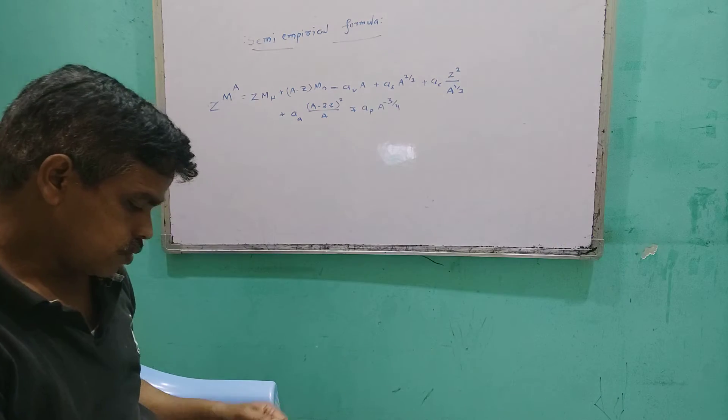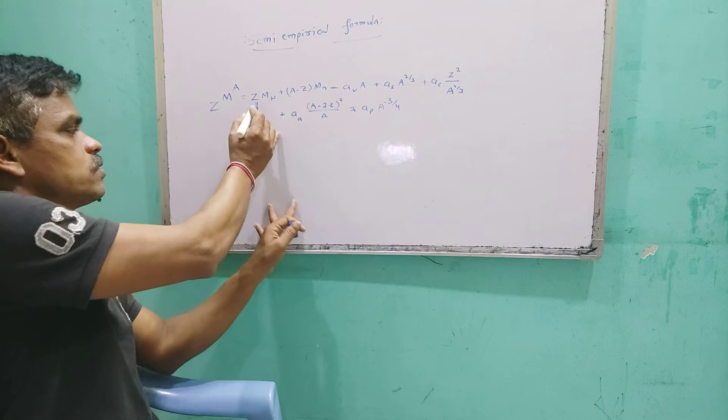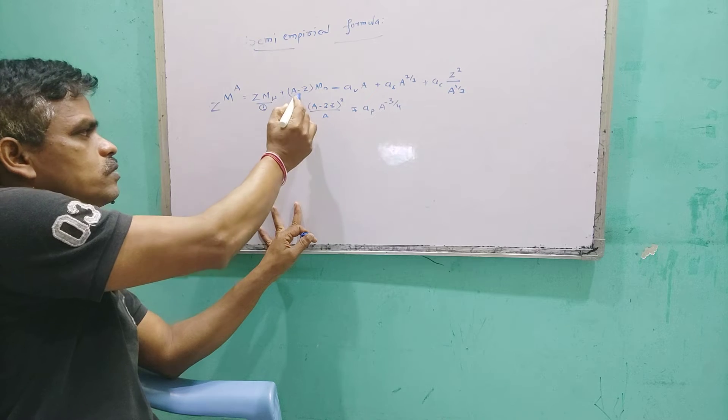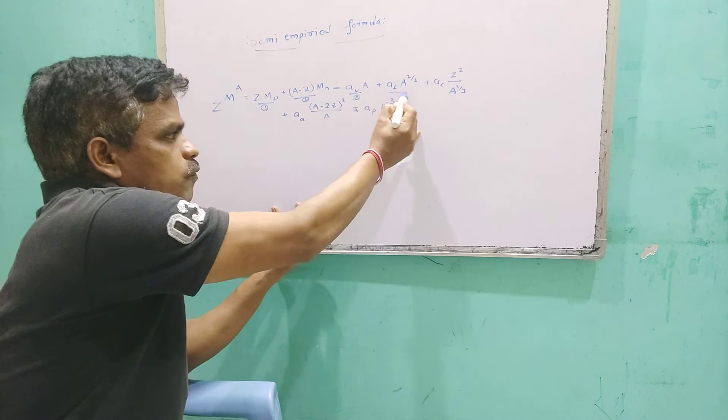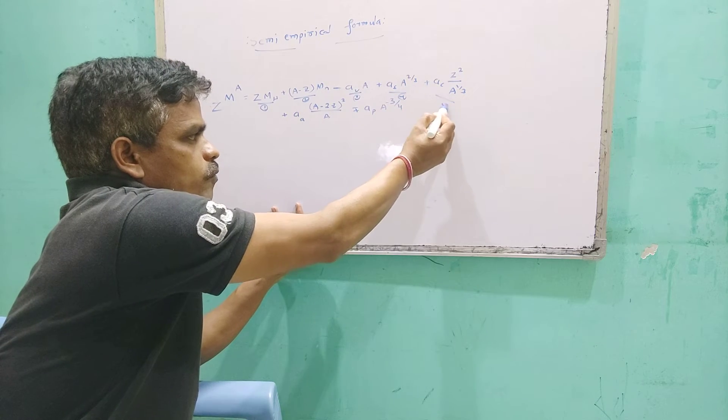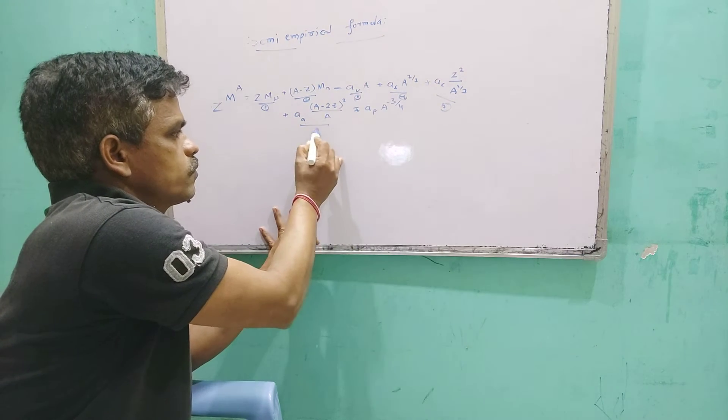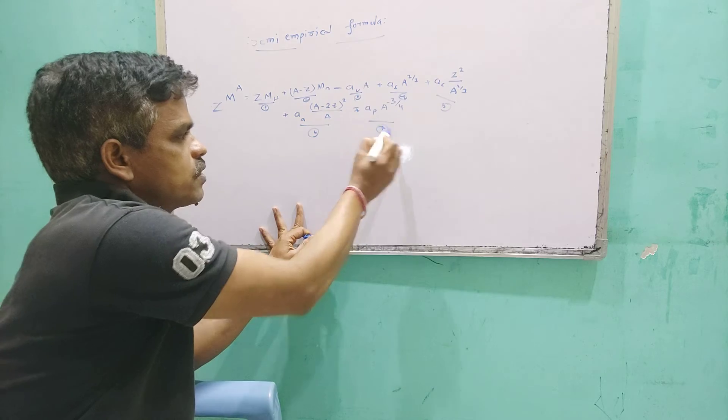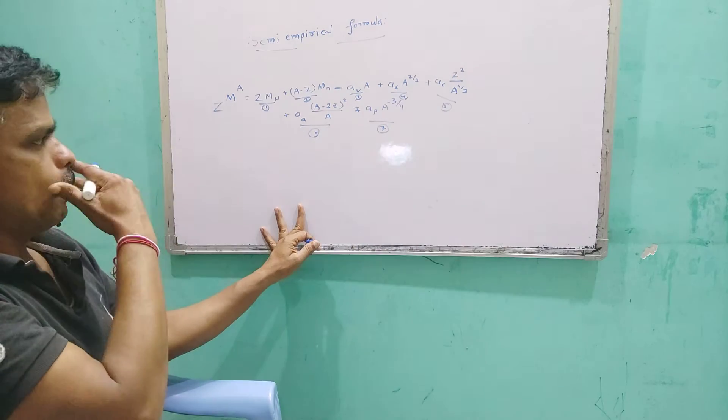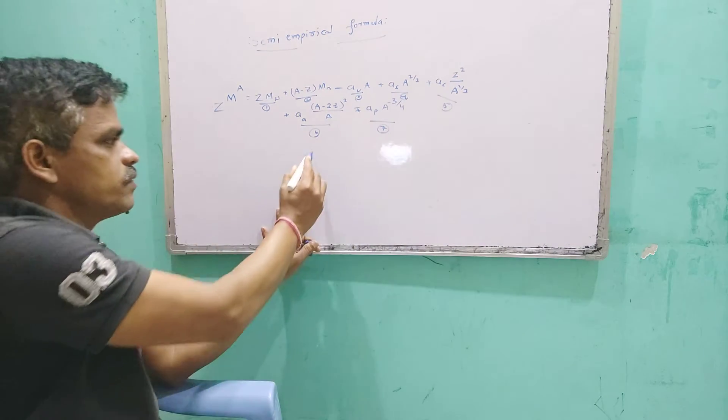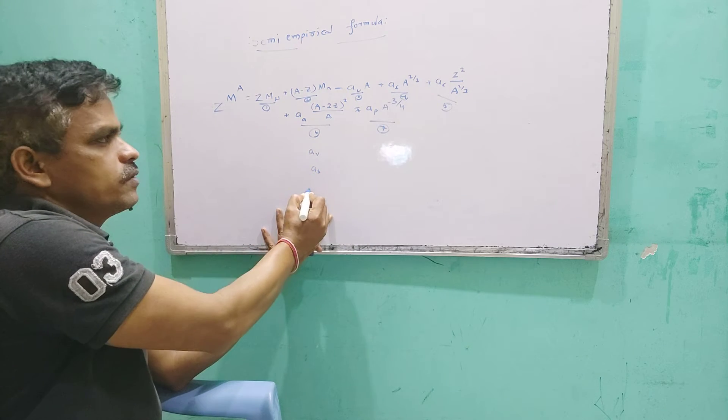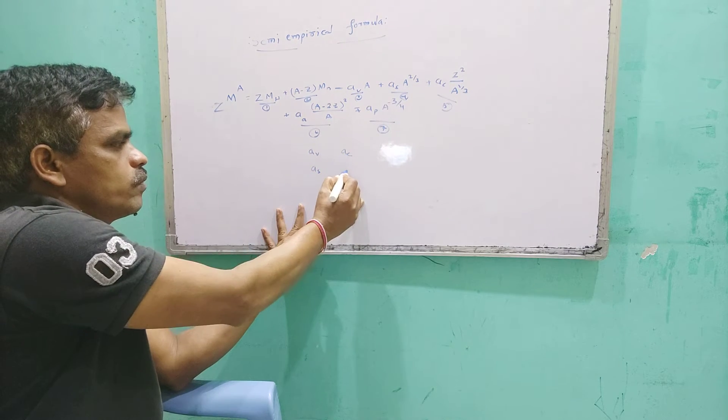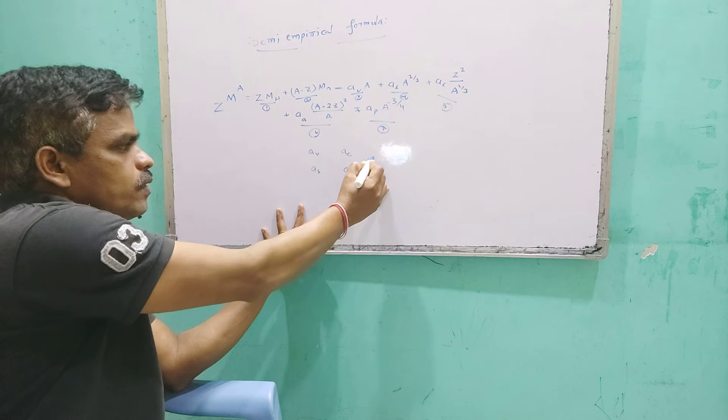...total terms. This is 1, this is 2, this is 3, 4, 5, 6, 7 - seven terms are there in the semi-empirical formula. The different terms are: AV value, element, symmetry, coulomb, asymmetry, parity.